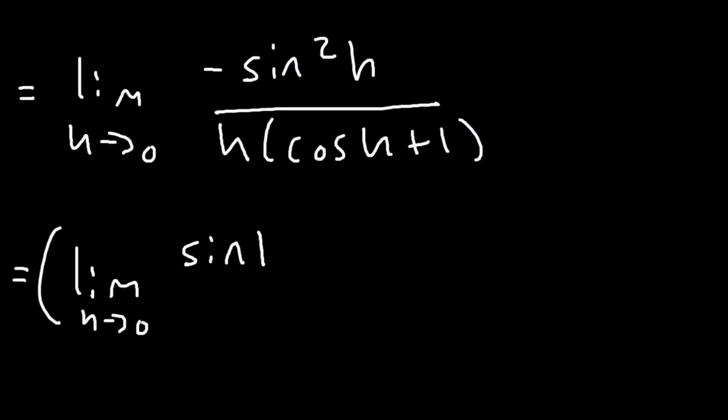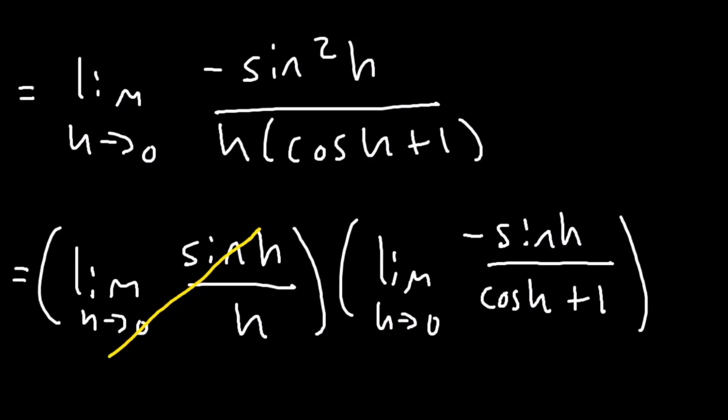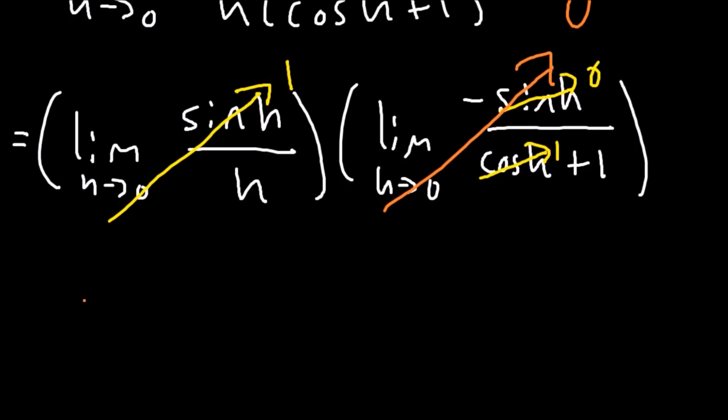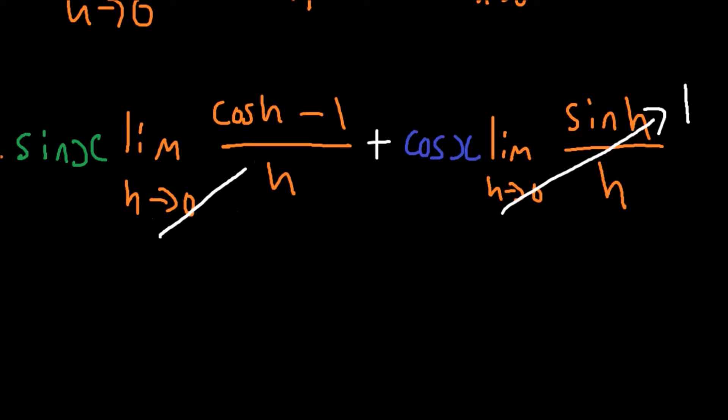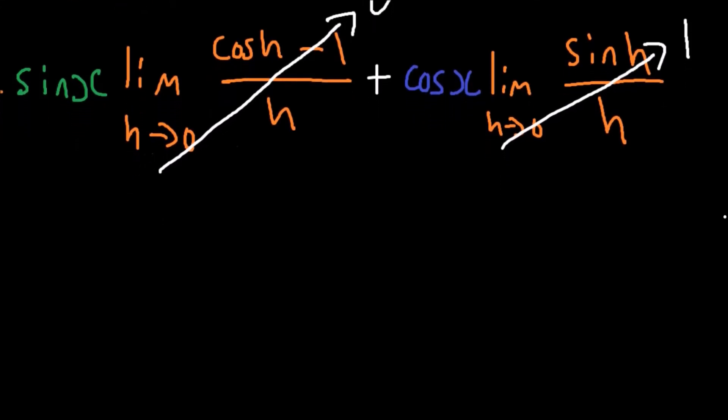The limit now becomes the limit as h approaches zero of sine h over h multiplied by the limit as h approaches zero of minus sine h over cos h plus one. The limit on the left will evaluate to one as we've seen time and time again, and the limit on the right will evaluate to zero since negative sine of zero is zero, and the denominator evaluates to two, eliminating the zero divided by zero scenario. Taking this back to the original problem, if the limit that we looked at separately evaluates to zero, then the only term that remains is the cos of x.